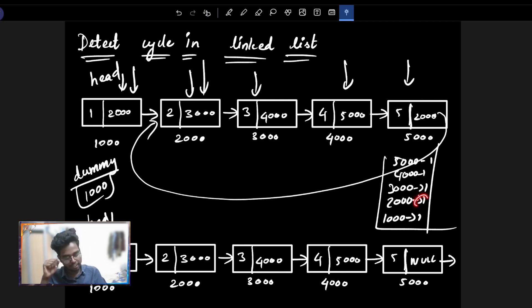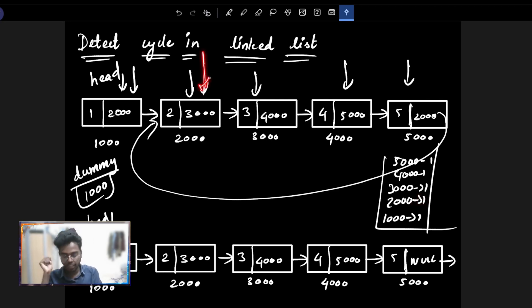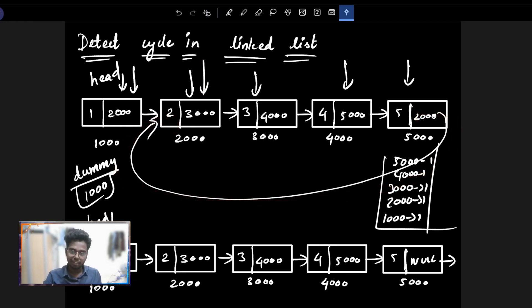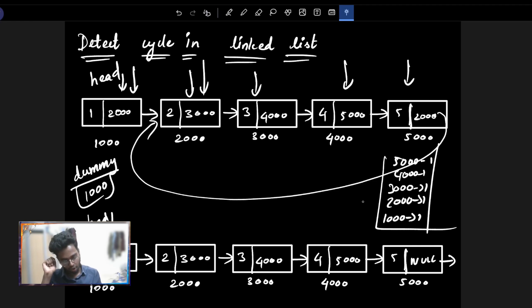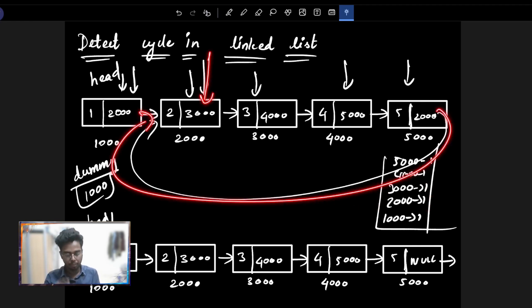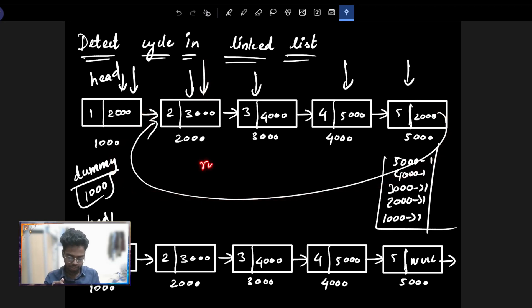Default is default. If there is one, it's already present. If it's already present, there is a loop. So at that particular moment, in 2001, there is a reference found. Just return true.